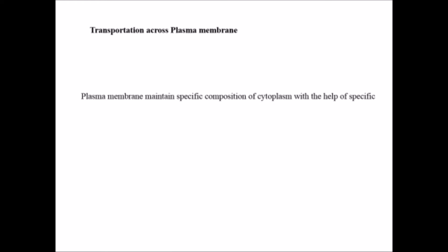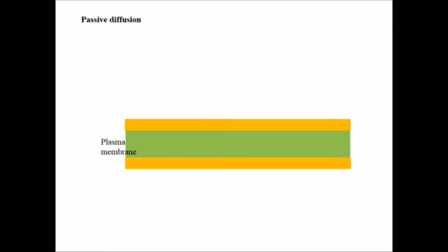Let's begin with transportation across the plasma membrane. The plasma membrane maintains a specific composition of the cytoplasm with the help of specific transport proteins like carrier proteins and channel proteins. There are different types of transportation. One type passes across the plasma membrane along the concentration gradient, from higher concentration to lower concentration — this is termed passive diffusion.